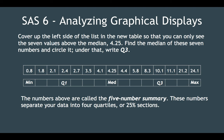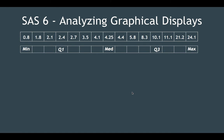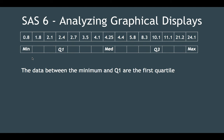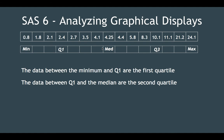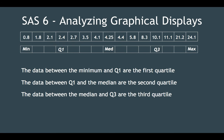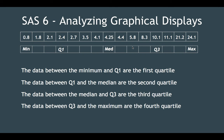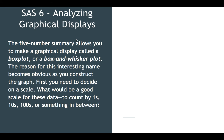The data between the minimum and Q1 is the first quartile. Between Q1 and the median is the second quartile — quartile meaning a fourth of the whole. Data between the median and Q3 is the third quartile, and between Q3 and the maximum is the fourth quartile. The five number summary allows you to make a graphical display called a box plot or box and whisker plot. The reason for this interesting name becomes obvious as you construct the graph.